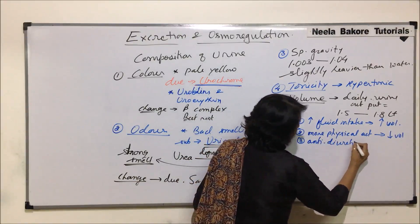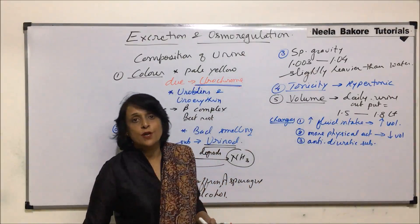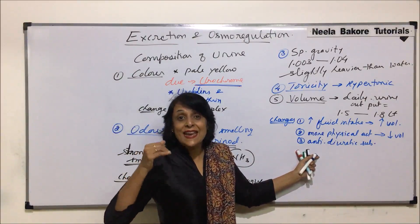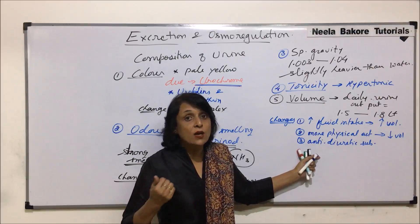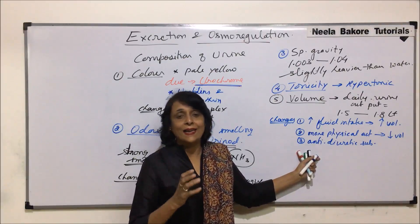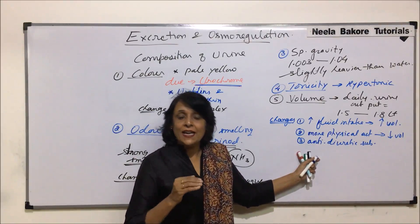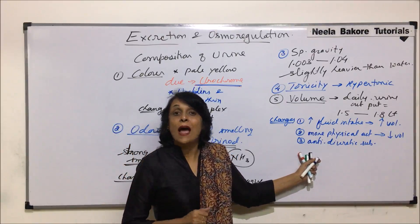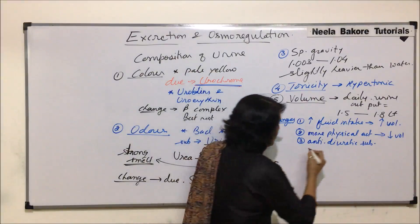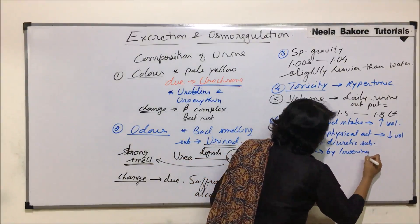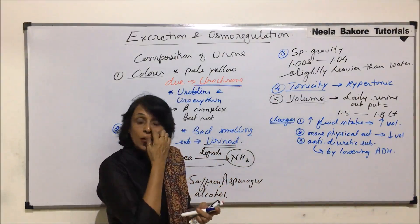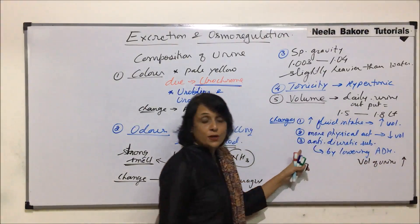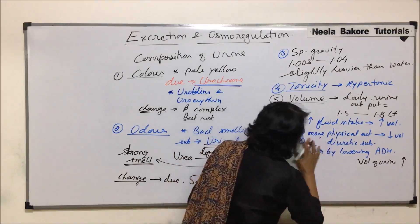The third main factor is consumption of diuretic substances. Diuretic substances increase urine output or urine volume. They work by inhibiting the secretion of ADH — anti-diuretic hormone. ADH helps in water absorption from the collecting duct. If ADH production decreases, water absorption from the collecting duct also decreases, meaning more water is excreted, so urine output increases.